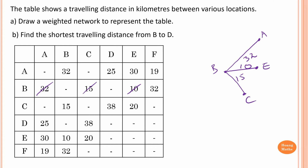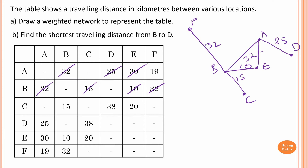And then B to F is 32 — I'll just write F roughly here, 32. Now let's move to A. A to B already done. A to D is 25, and D also connects with C, so I'll write it on that side so the network looks neater. A to D is 25, so D here — this is 25. And then A to E is 30, so this is 30. And then A to F is 19, so I just draw here — this is 19.